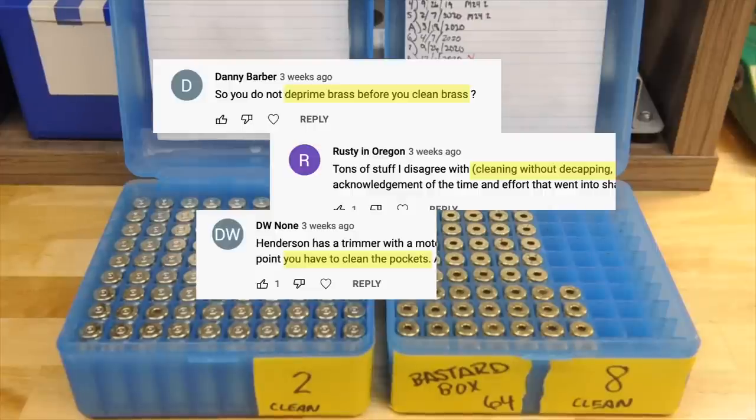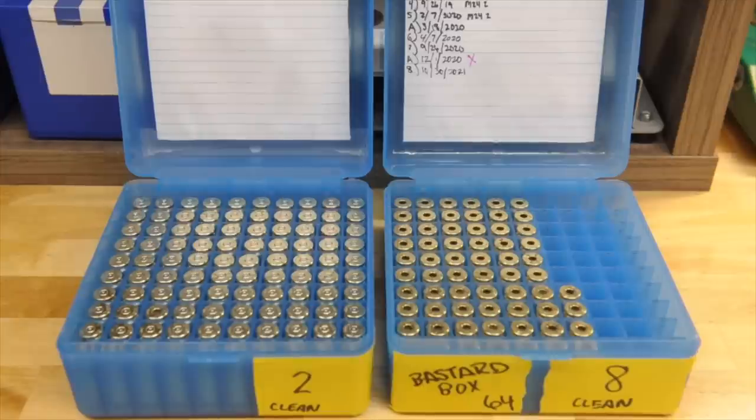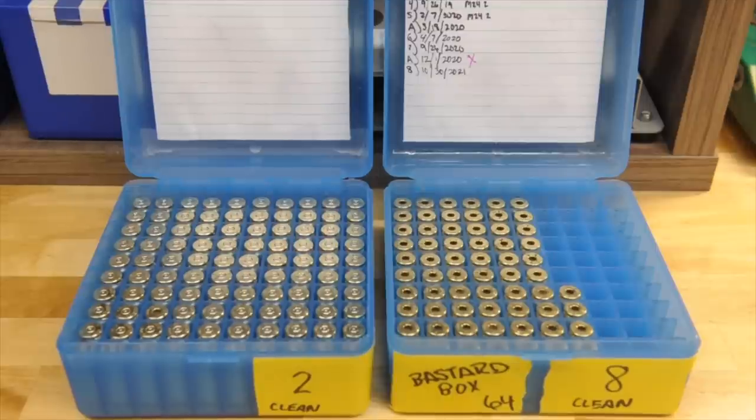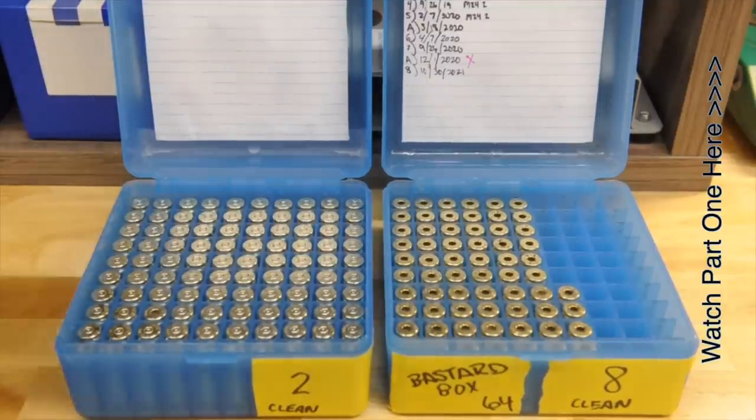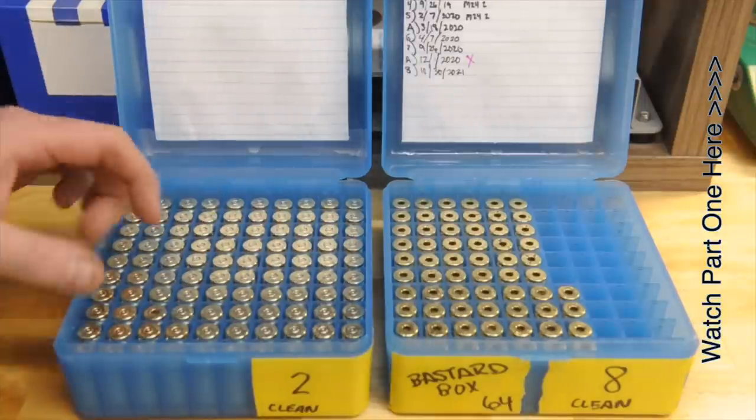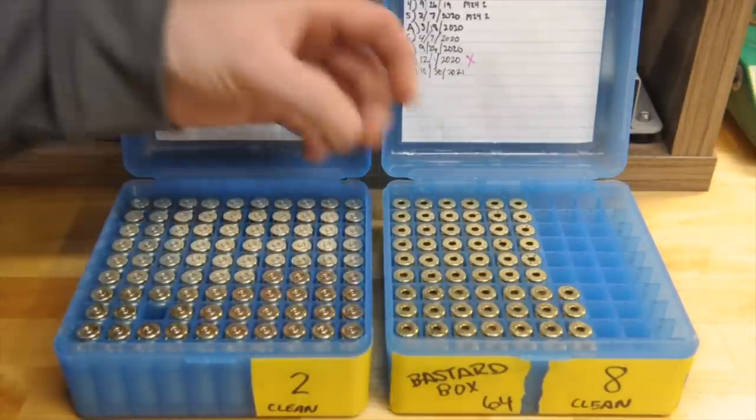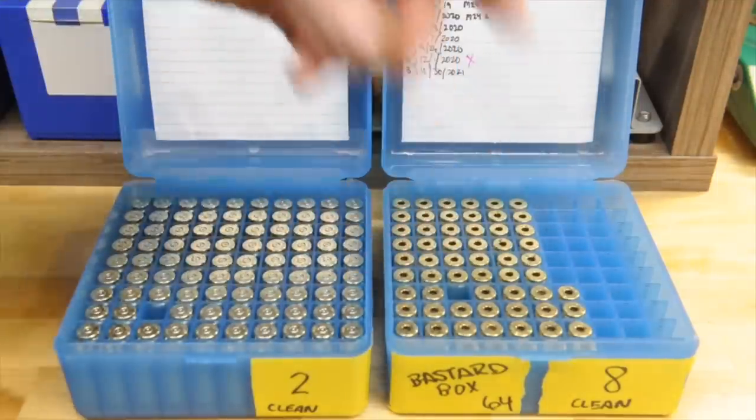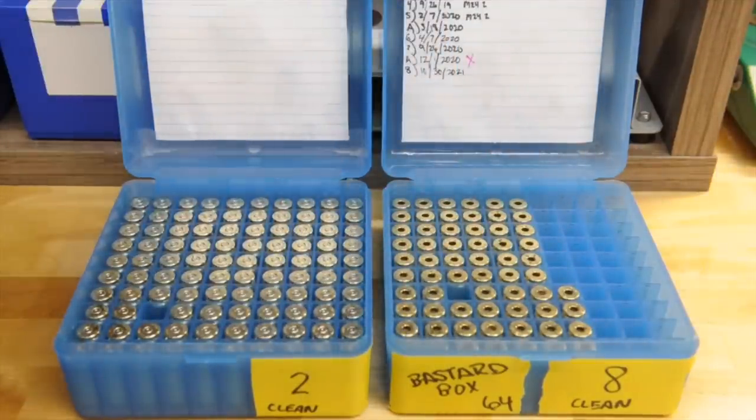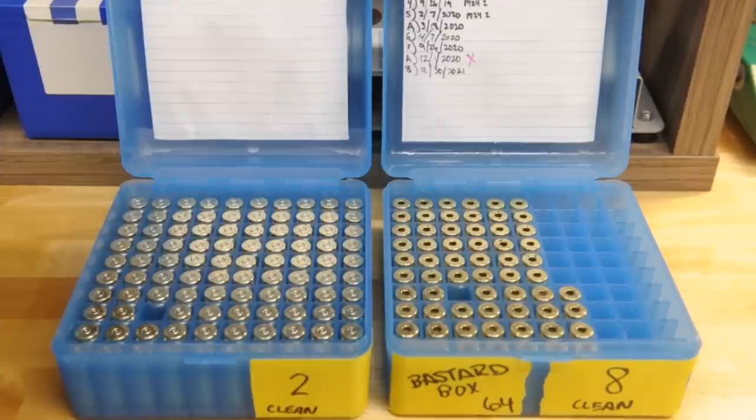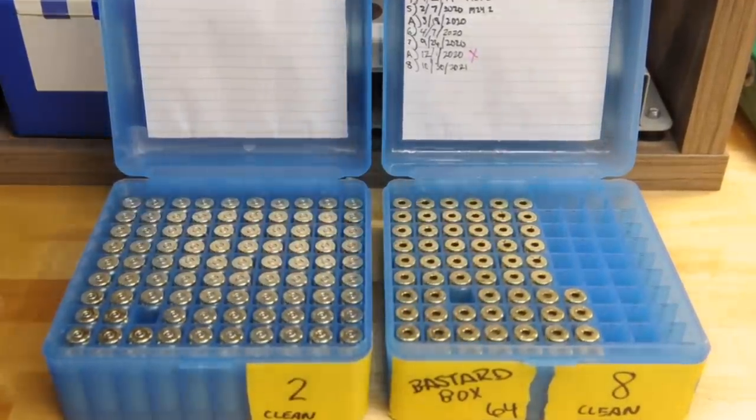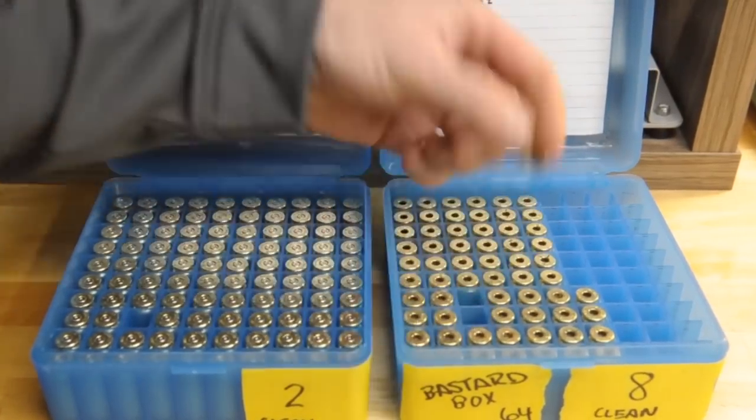One of the big things I saw was decapping before tumbling. The reason I don't do that is because I've tried it, I've tried scraping the carbon out of primer pockets and it just never made a difference to me. So what I've got here is a second fire batch of brass that I've resized and popped the primer out of, and then some of our batch for this video what we're going to be using, and that is 8 fires.